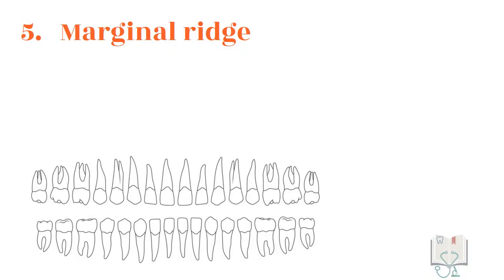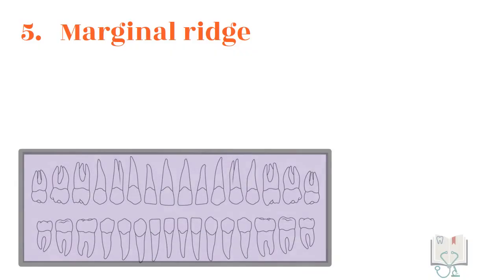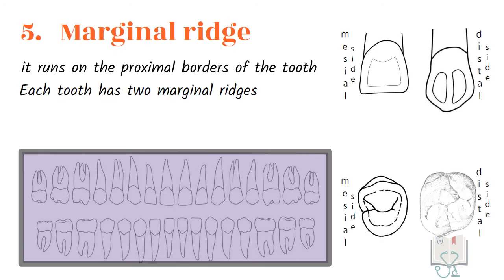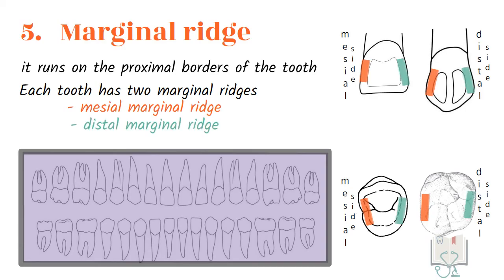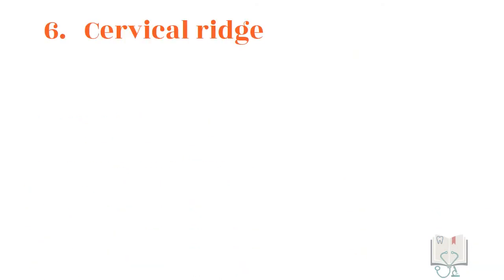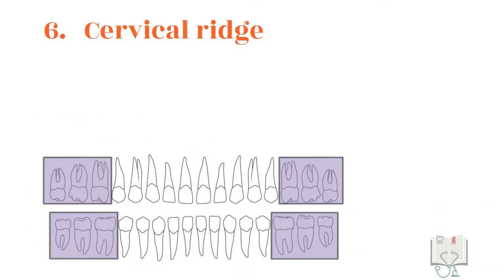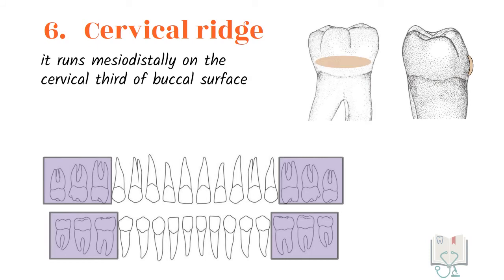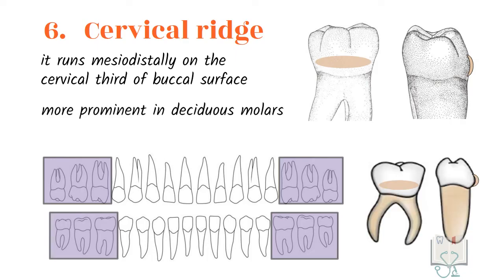The marginal ridge is the only ridge present in all teeth, running on the proximal borders of the tooth. Each tooth has two marginal ridges: one mesial and one distal. In anterior teeth they are present on the lingual surface, and in posterior teeth on the occlusal surface. The cervical ridge is seen in all molars — it is a ridge running mesiodistally in the cervical third of the buccal surface, and is more prominent in deciduous molars than permanent molars.